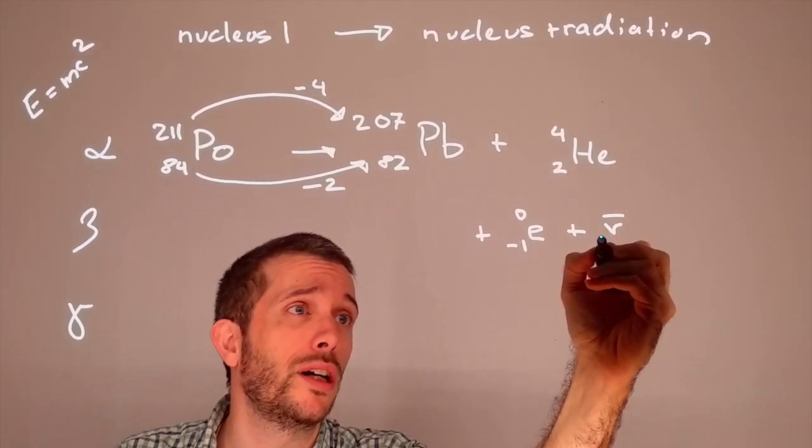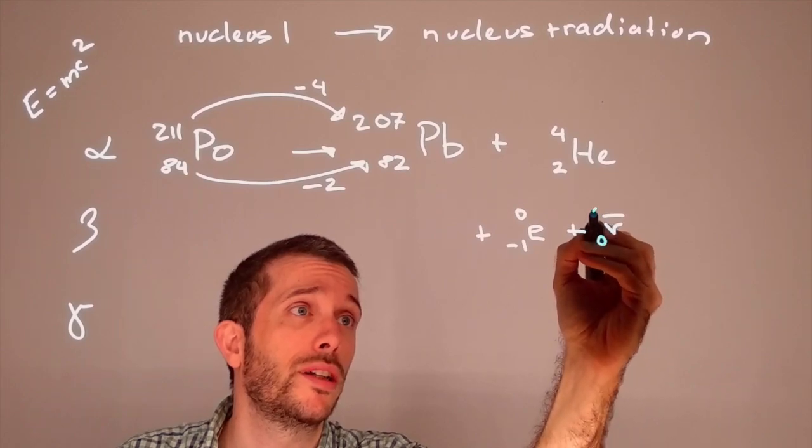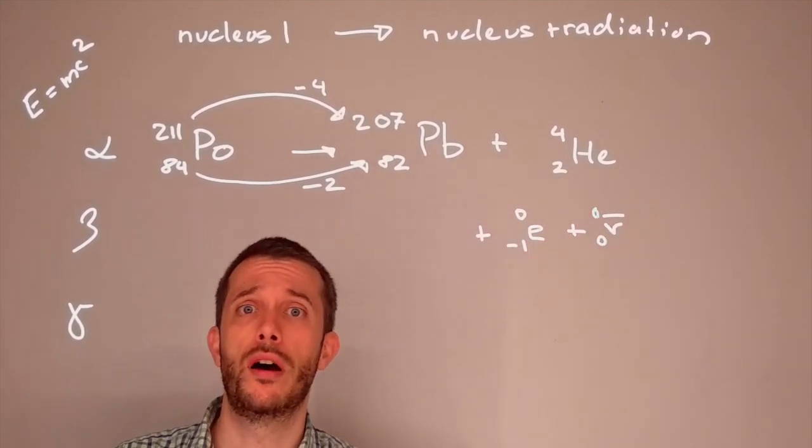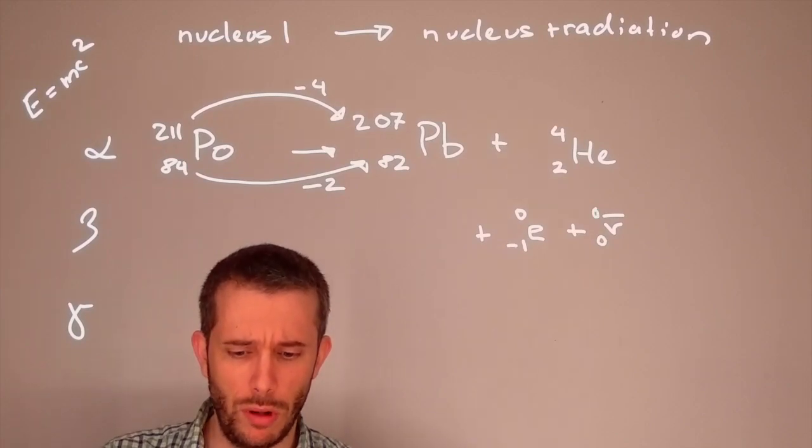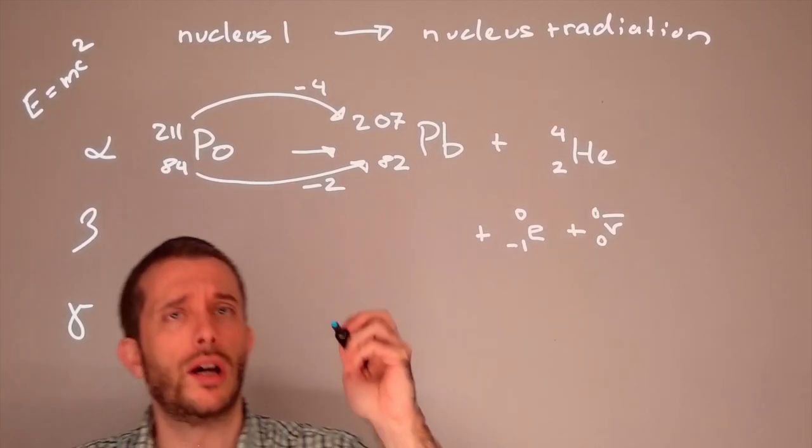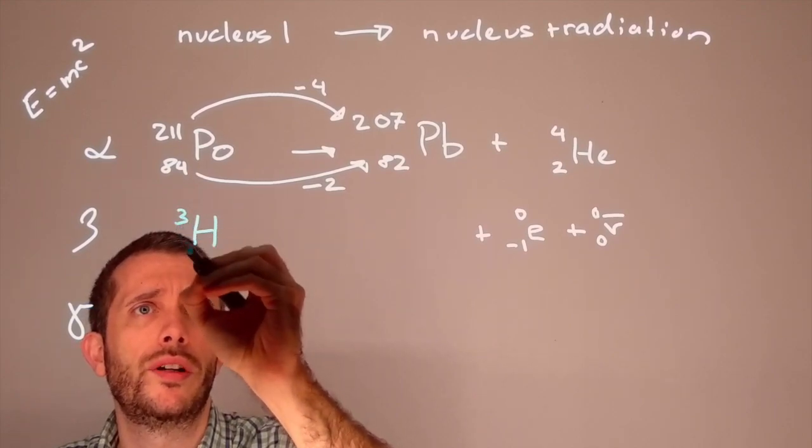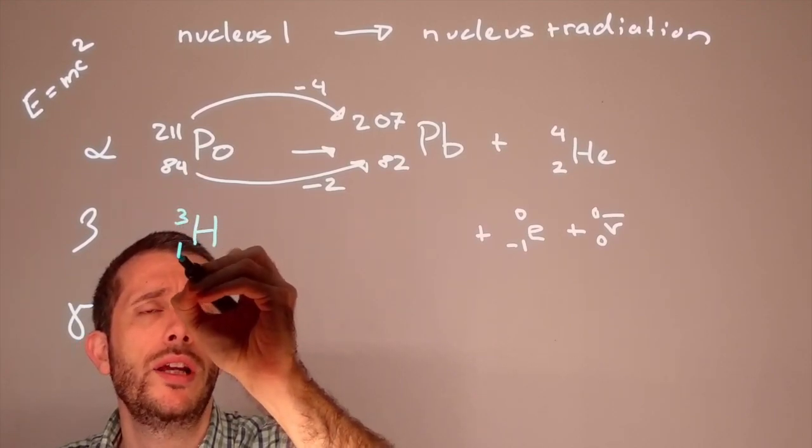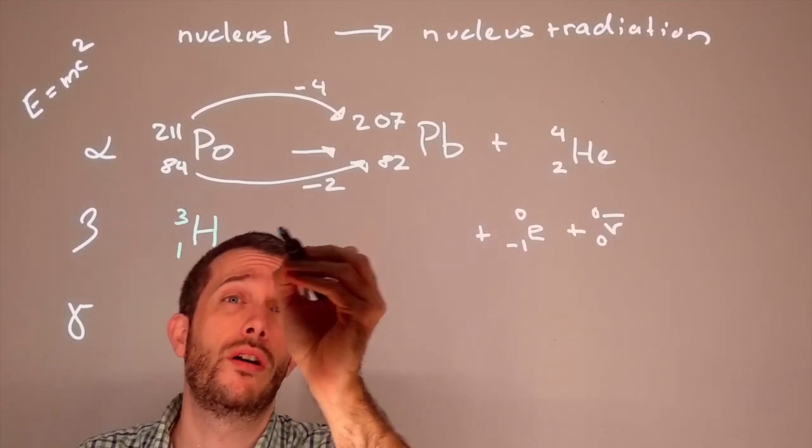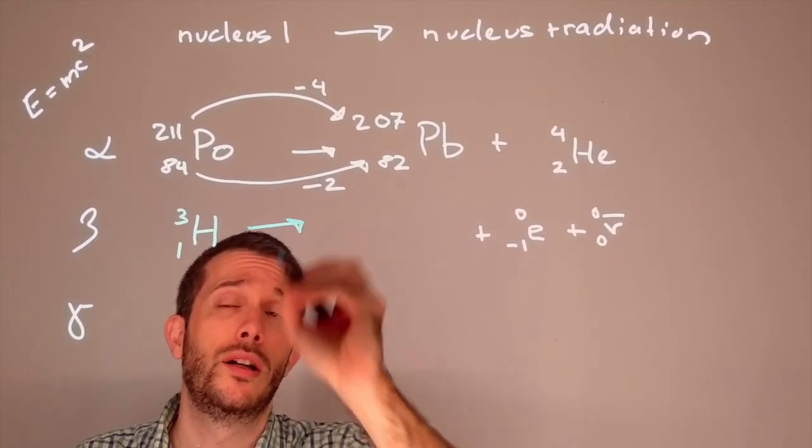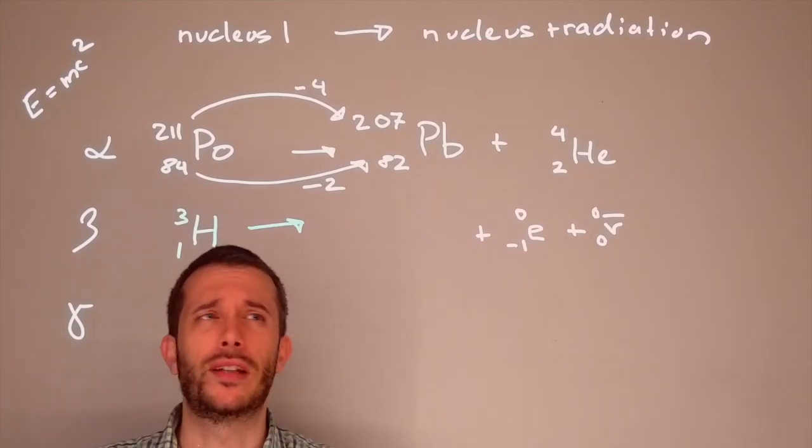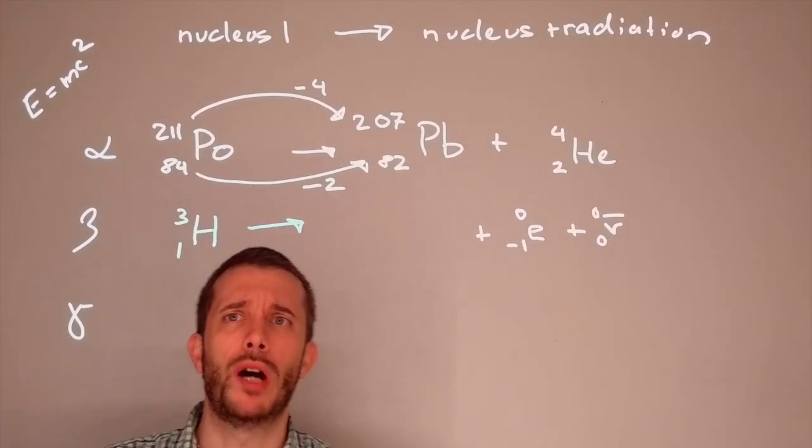So let's give an example. Hydrogen 3 undergoing beta decay. So we have a mass number of 3, and one proton undergoing beta decay. Now how did the electron come up here?